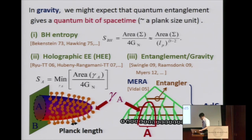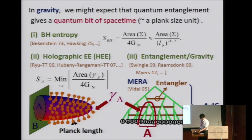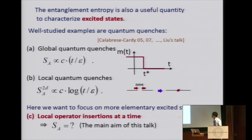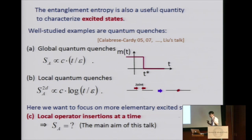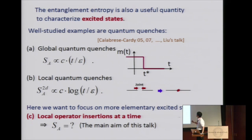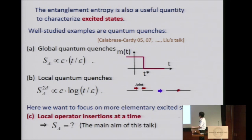This is quite a nice correspondence, and it suggests that the idea of quantum entanglement is quite useful for understanding quantum gravity. In this talk, I'd like to also mention that previously I talked about entanglement entropy for the ground state, which is related to the central charge and so on. But I'm more interested here in looking at excited states rather than the ground state. Entanglement entropy is also a useful quantity to characterize excited states.